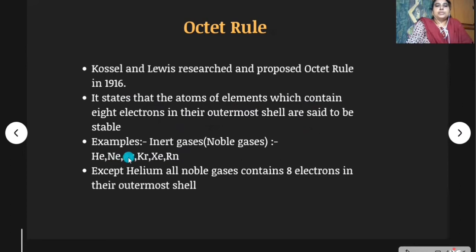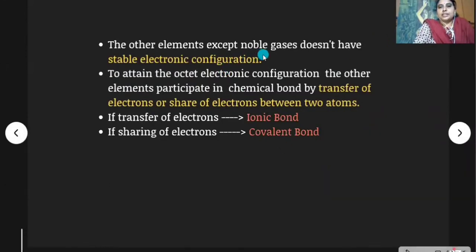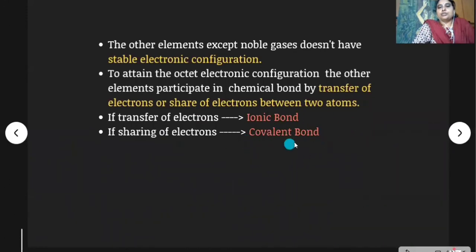The noble gases are helium, neon, argon, krypton, xenon and radon. Except helium, the remaining noble gases contain eight electrons in their outermost shell. Helium contains only two electrons — that is 1s2, a fully filled electronic configuration, so it is also stable. The other elements, except noble gases, don't have stable electronic configuration. To attain the octet configuration, other elements participate in chemical bonding by transfer or sharing of electrons. If transfer of electrons takes place, ionic bond is formed; if sharing takes place, covalent bond is formed.